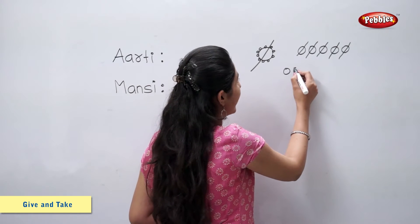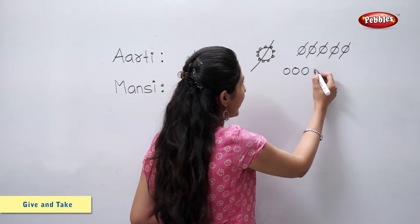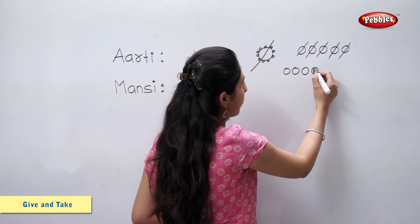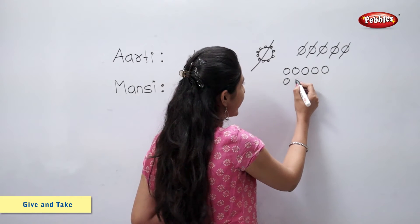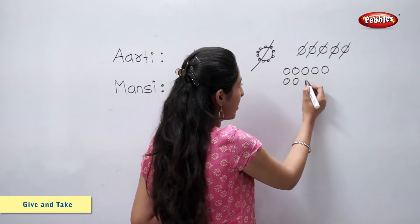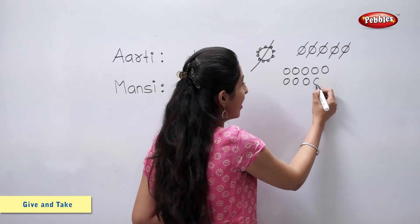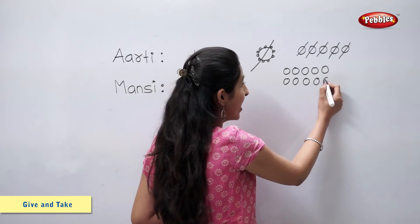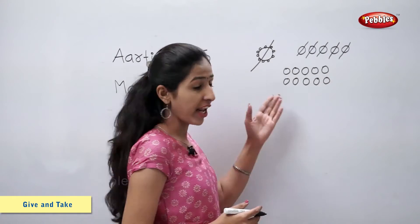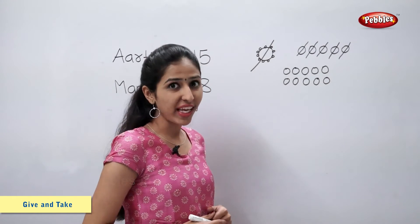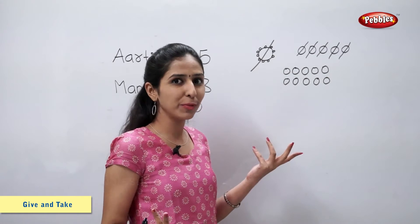This bangle goes away and we get 10 more loose pearls. 1, 2, 3, 4, 5, 6, 7, 8, 9 and 10. Now we have 10 loose pearls.